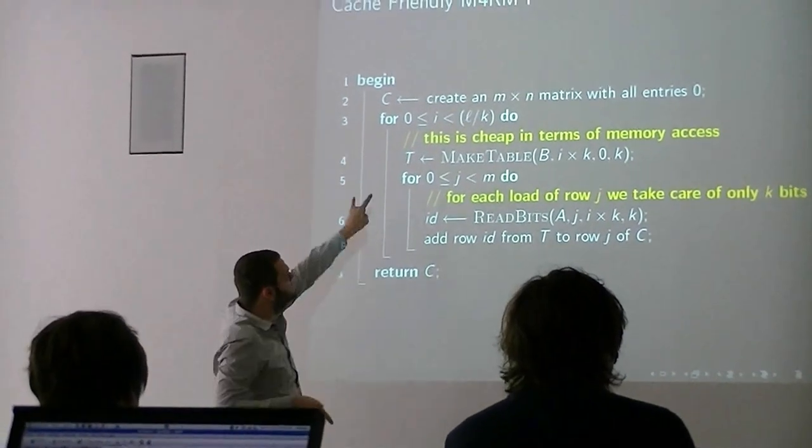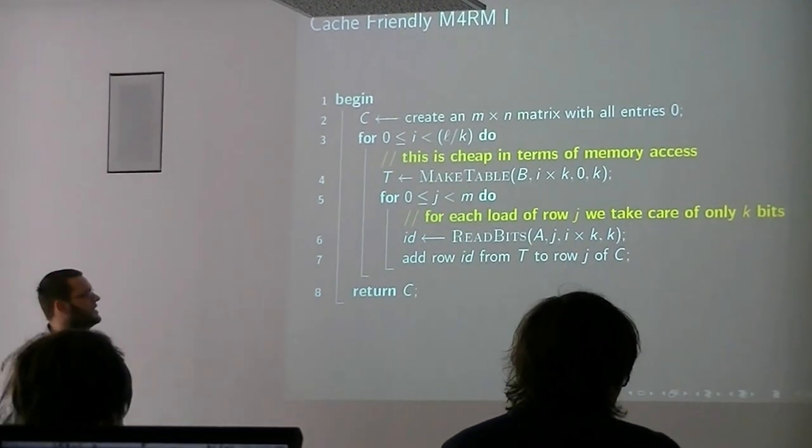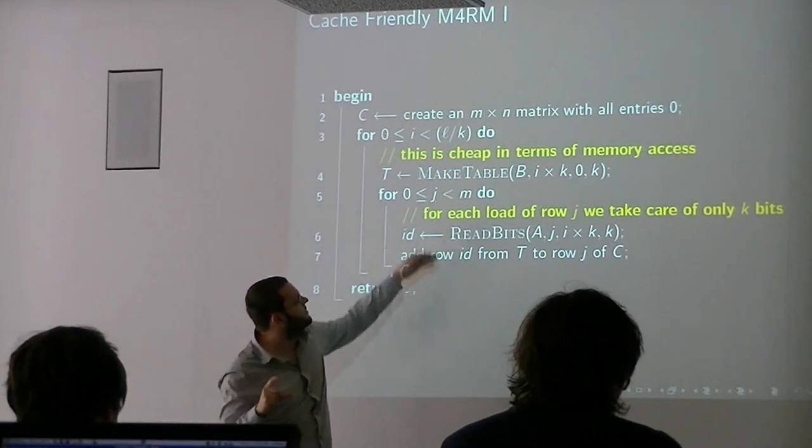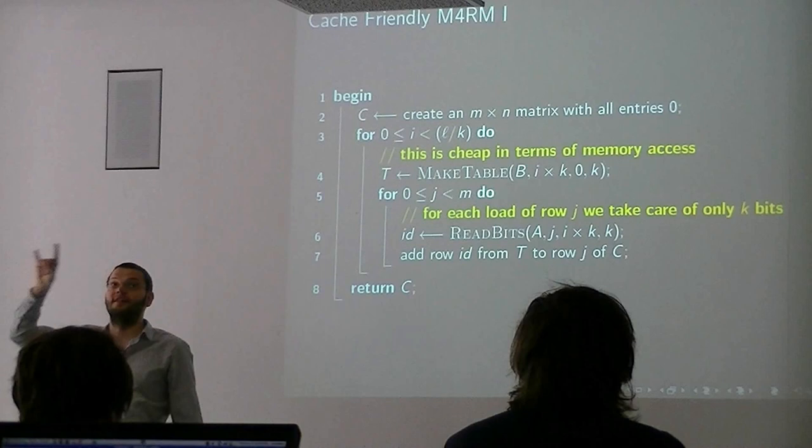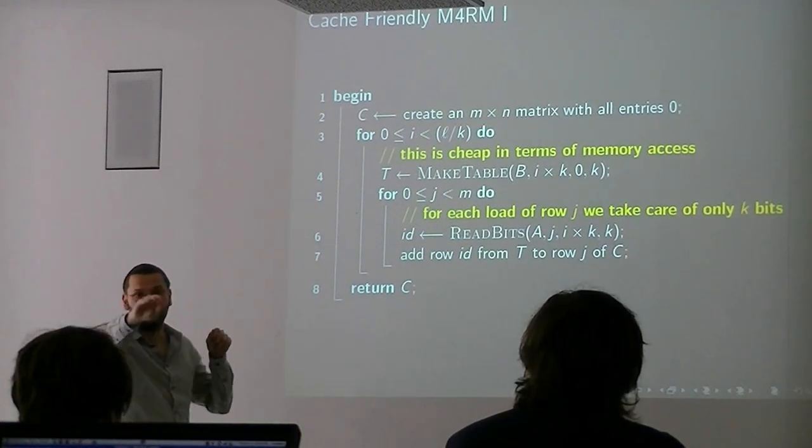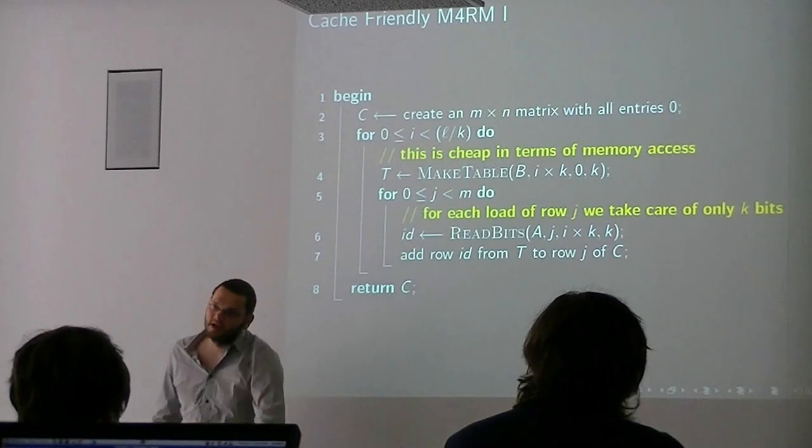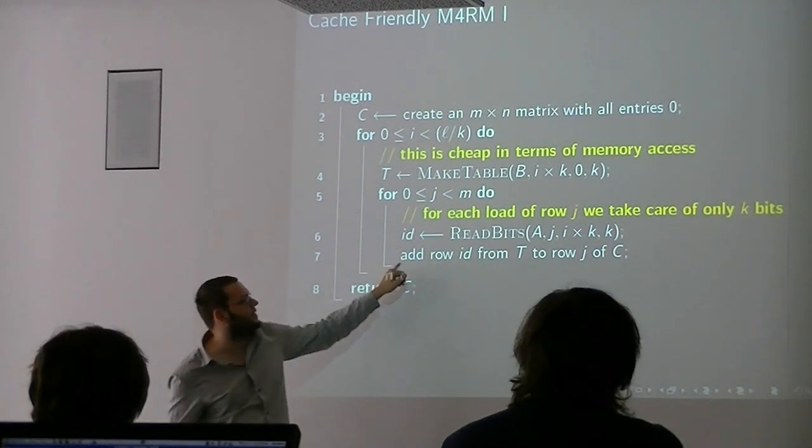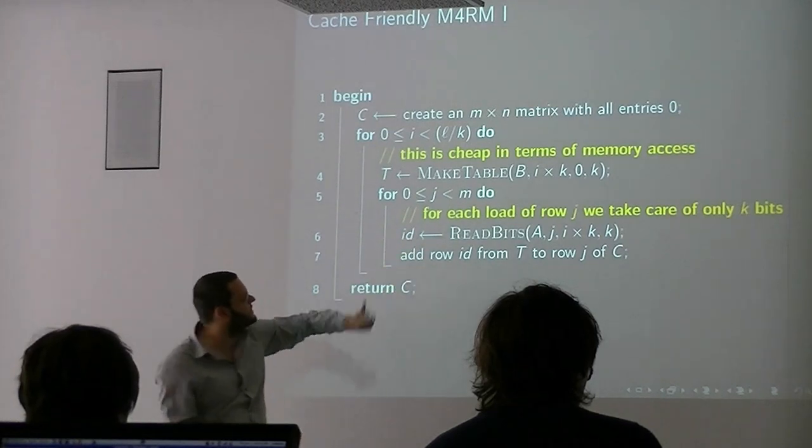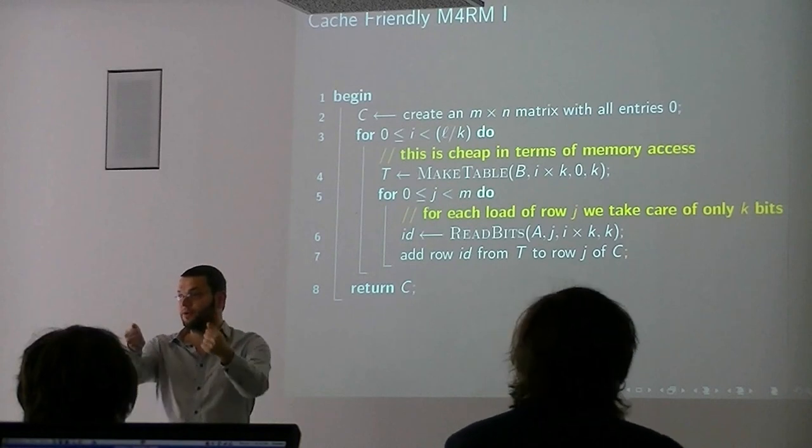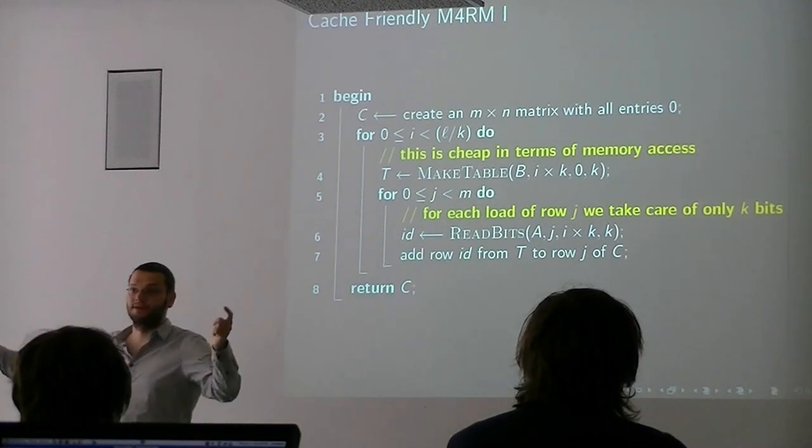When we look at the sub-algorithm of making this table, we're using the same rows of B over and over again, so this is very cheap in terms of memory access. But then we go through the matrix A, and we're storing our matrix in row major order already. So the rows are, the entries of the row are in one vector. Then we go down the rows of A, load an index, and then we load something from the table and add it to C. So every time, for each of these k bits that we're taking care of in each iteration, we're doing a load from A to get these few bits, and then we're loading a row from C, doing one XOR, and storing the row from C. In terms of memory access, that's not good.